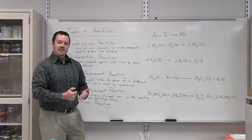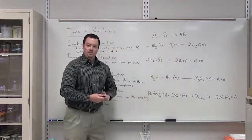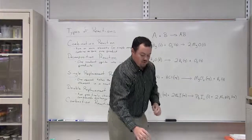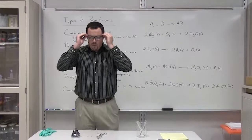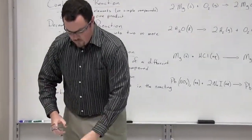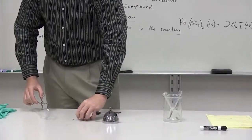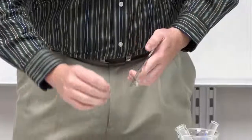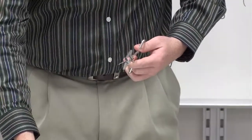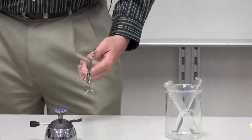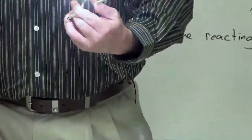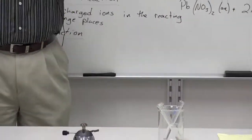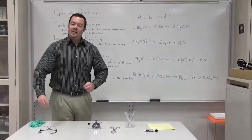Here's an example of a combination reaction. When we take magnesium solid and react it with oxygen from the atmosphere, we yield a solid product called magnesium oxide. Let's do this reaction and see what happens when magnesium reacts with oxygen. In order to start this reaction we need a flame.